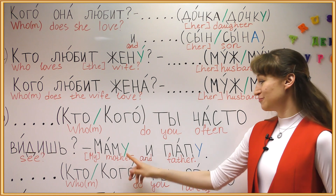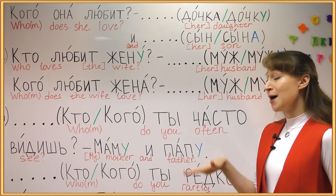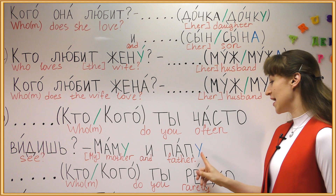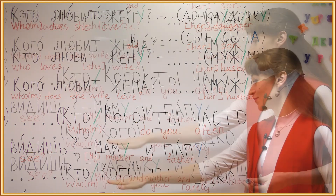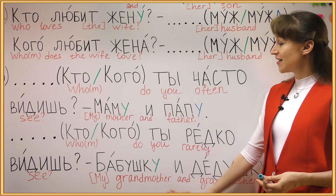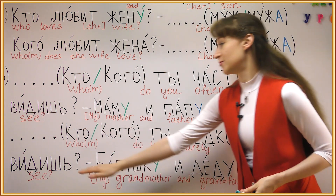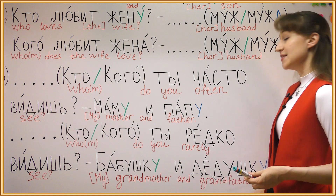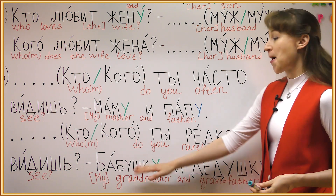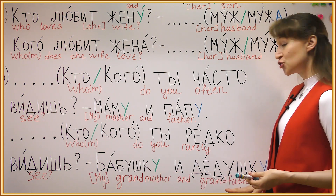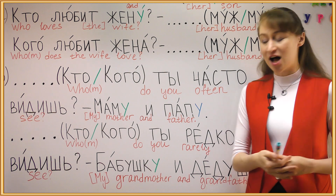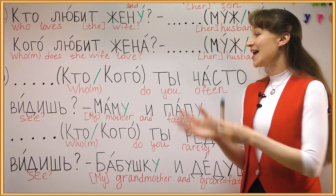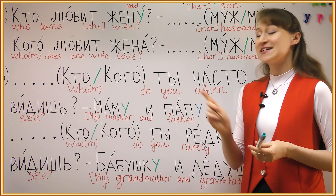МАМА is a feminine noun, ending У in the object form. ПАПА is a masculine noun but ending in А, so changing just like a feminine noun, again ending У. КОГО ТЫ РЕДКО ВИДИШЬ? БАБУШКУ И ДЕДУШКУ — same thing. БАБУШКА is feminine, У ending. ДЕДУШКА is masculine but ending in А, also У ending in the object form — КОГО, the object who. I hope you got it right.